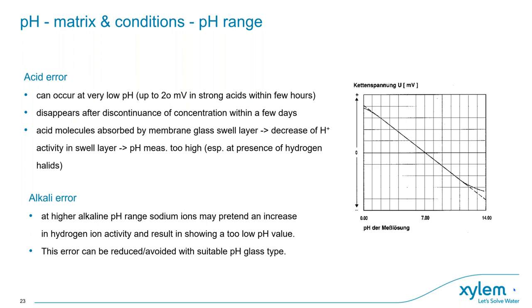For extreme pH values, the literature describes the so-called acid error and the alkali error. While the acid error is observed rarely, the alkali error occurs in a very alkaline range — around pH 13 or 14. High concentrations of sodium ions may mimic an increase in hydrogen ion activity, resulting in displaying a lower pH value than the true value. This alkali error can be reduced or avoided by using a suitable membrane glass type, which we will see more about later.